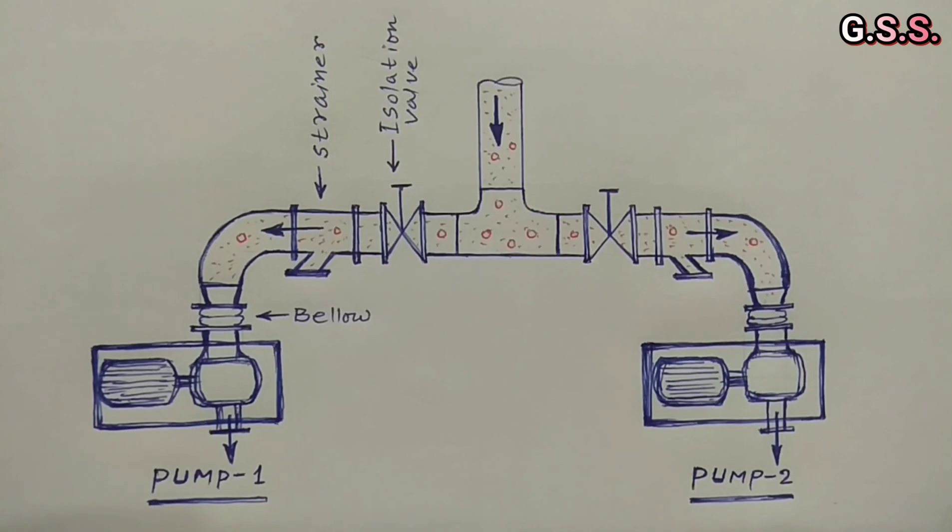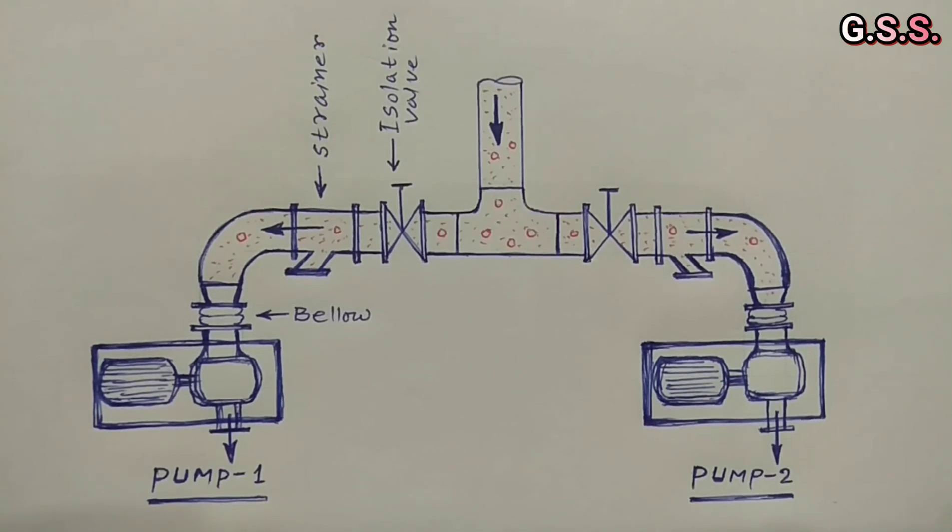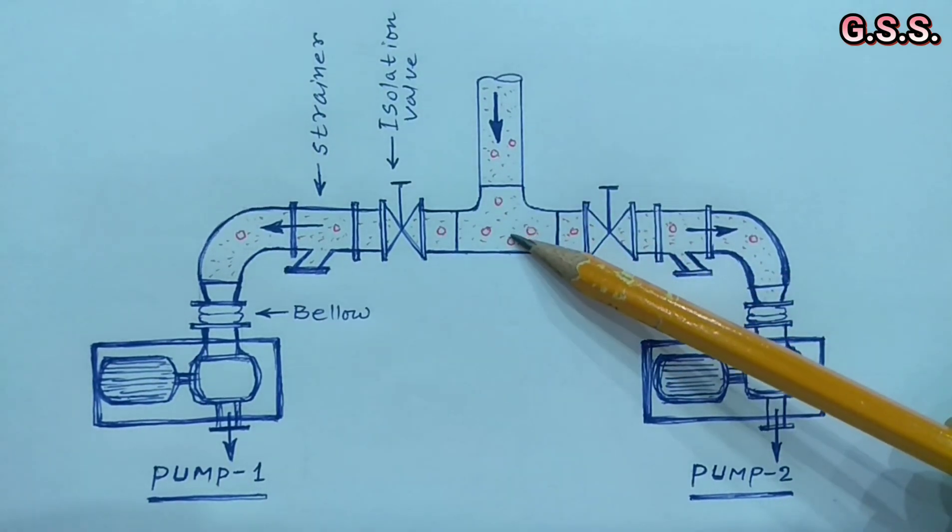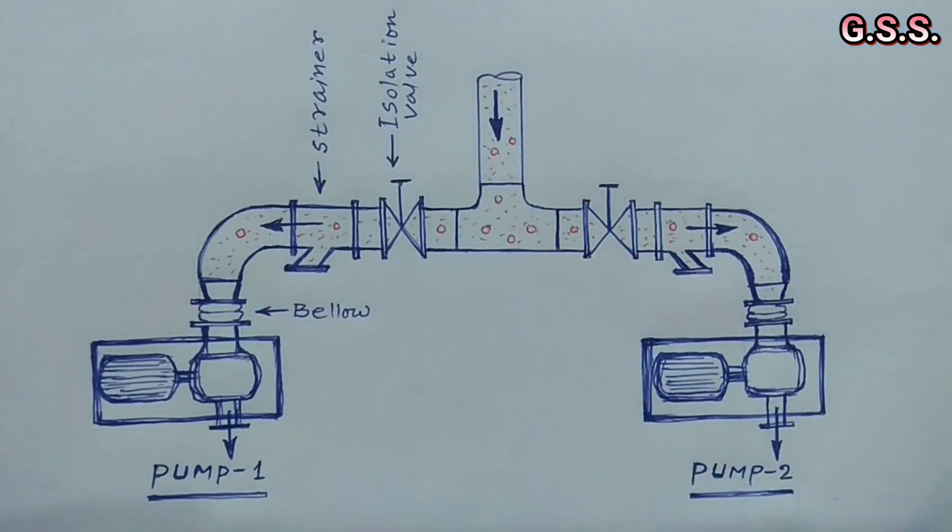Since liquid is incompressible and air bubble or vapor is compressible, in this T portion air bubble is compressed suddenly by liquid. Due to this, pipeline may vibrate.